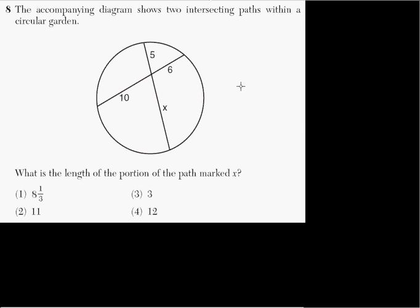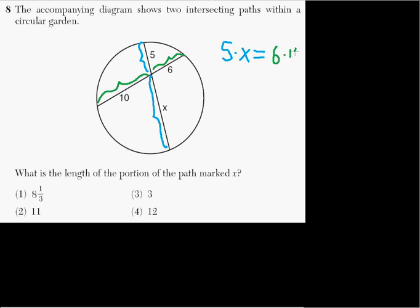Problem number eight. It says the accompanying diagram shows two intersecting paths within a circular garden. What is the length of the portion of the path marked as X? This uses a theorem from geometry that says this length times this length — so 5 times X — equals the product of the other two lengths, which equals 6 times 10.